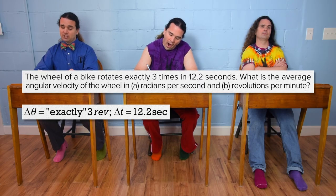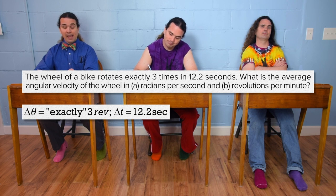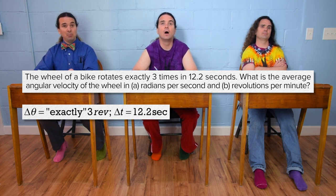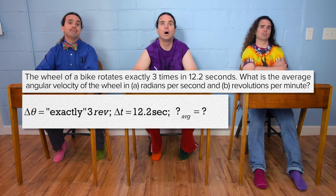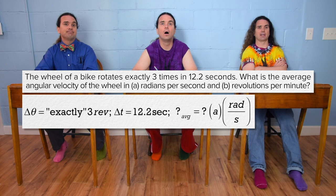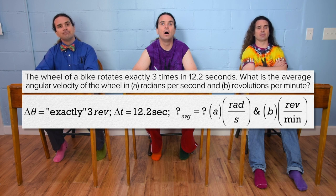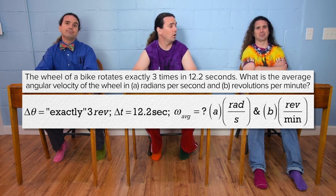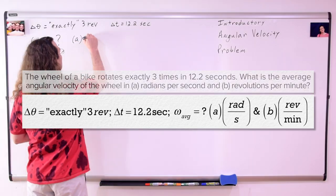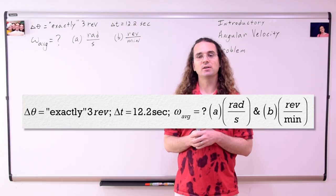What is the average angular velocity of the wheel in (a) radians per second and (b) revolutions per minute? Average angular velocity equals question mark in both radians per second and revolutions per minute. Bo, what is the symbol for angular velocity? It's like a curly w. Omega. Bobby, please solve part a.